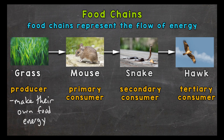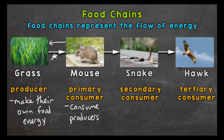Next we have primary consumers, so they consume or eat the producers. For our primary consumer we have a mouse. When the mouse consumes the grass, the energy from the grass is transferred to the mouse, and this arrow here represents the flow of energy from the grass to the mouse. The direction it is pointing is very important — if it was pointing the other way that would show the grass consuming the mouse. So again, the arrows represent the flow of energy and the direction they are pointing is very important.